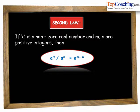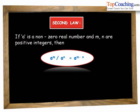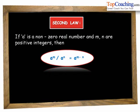In the case of multiplication the exponents were being added. Now in the case of division the exponents are subtracted. So a to the power of m by a to the power of n is equal to a to the power of m minus n.